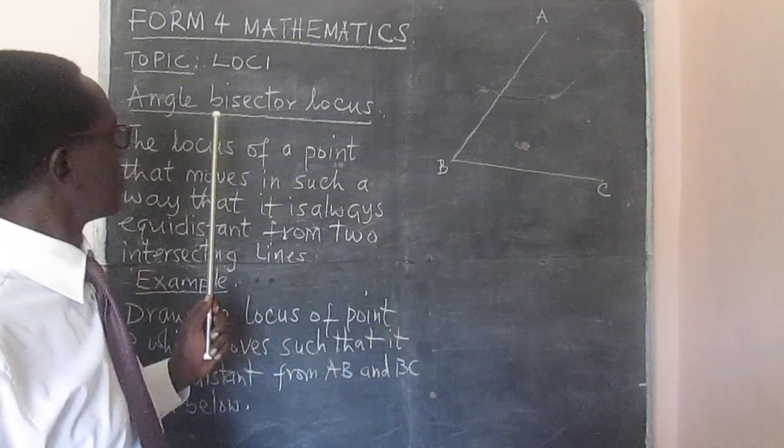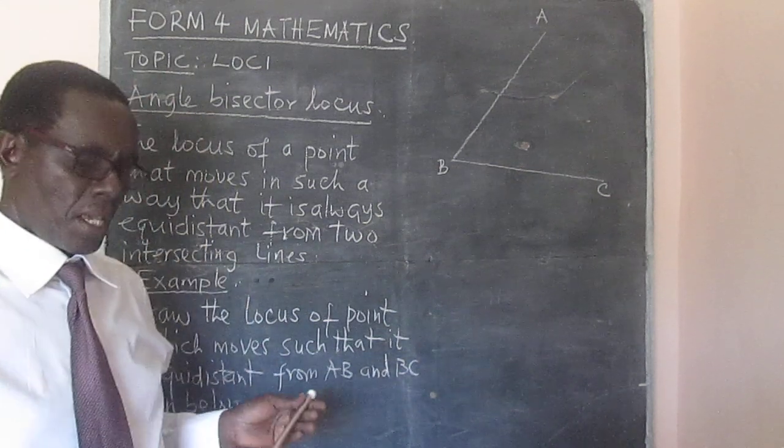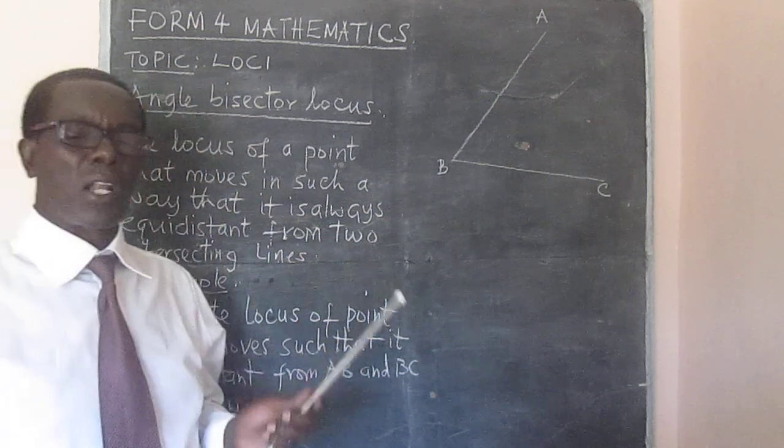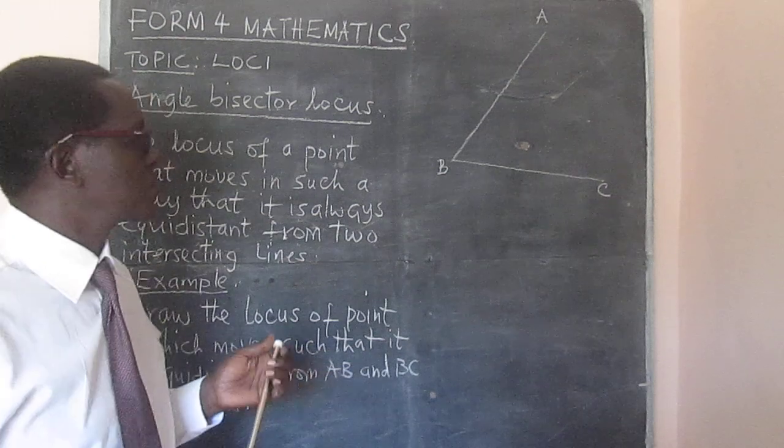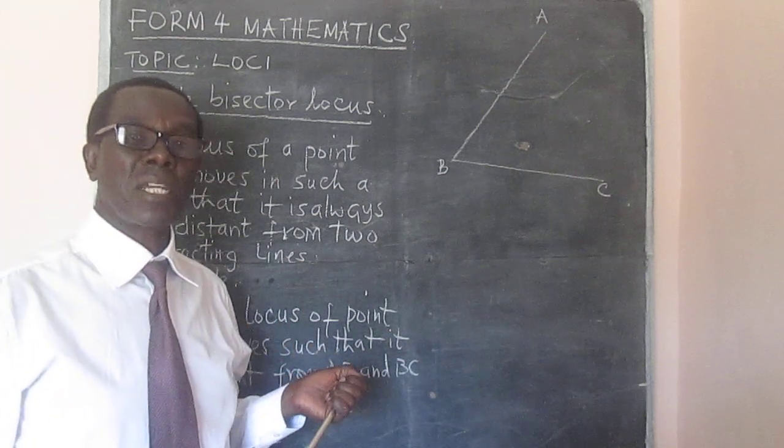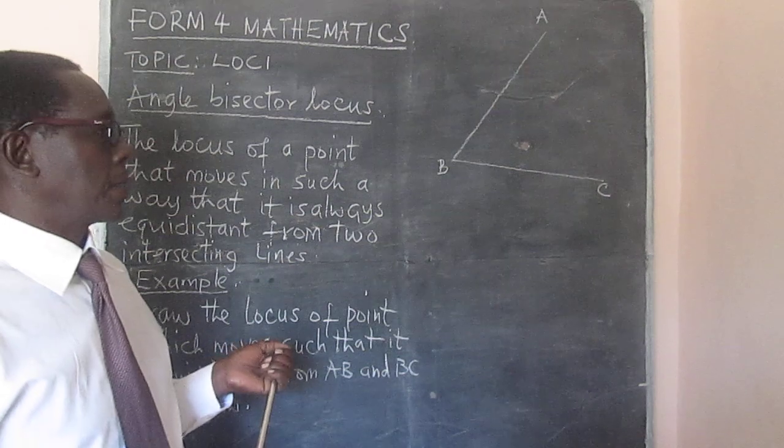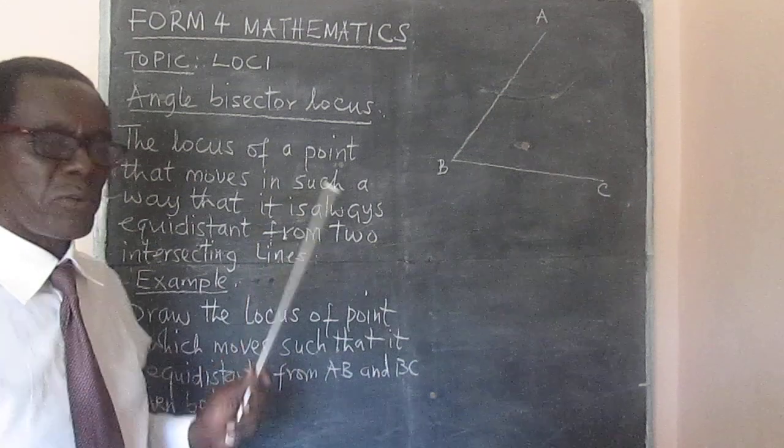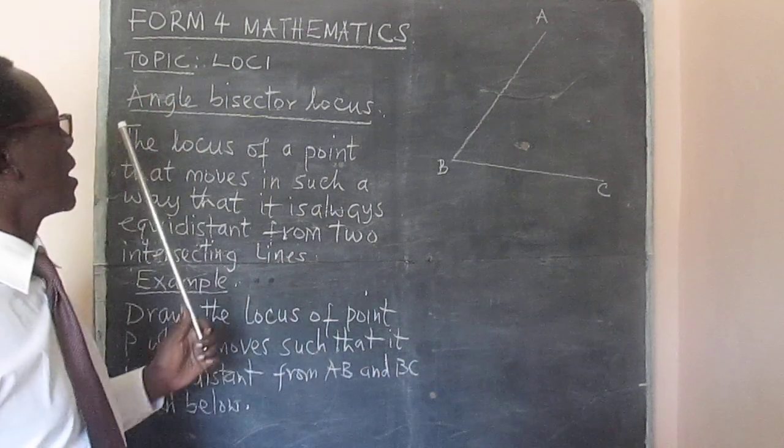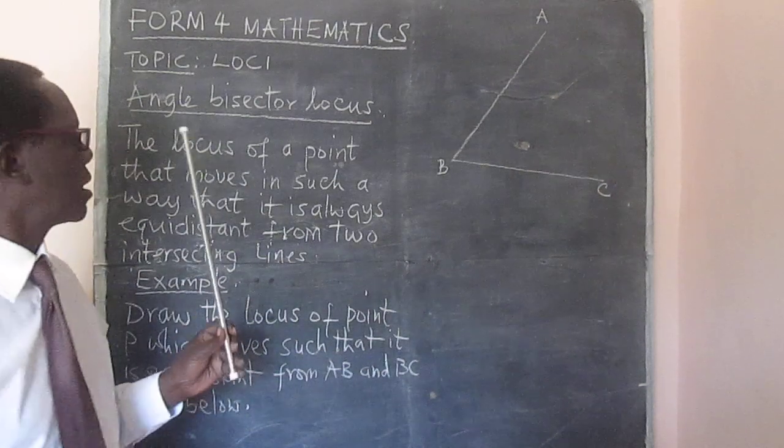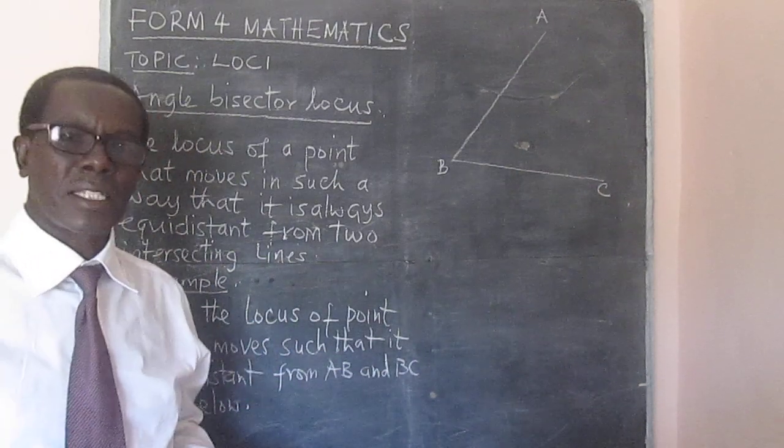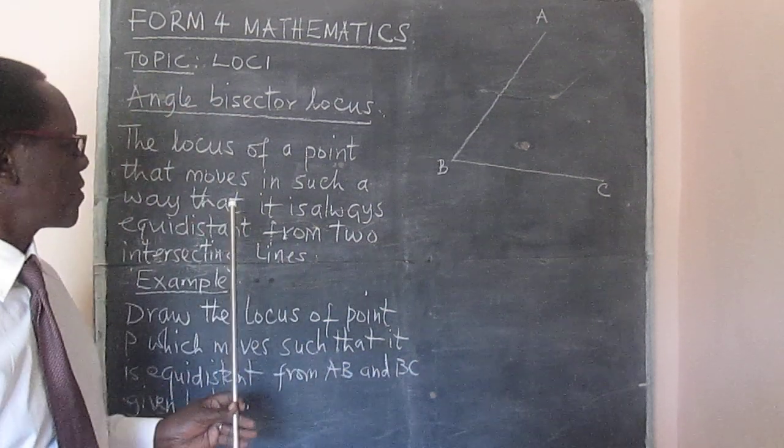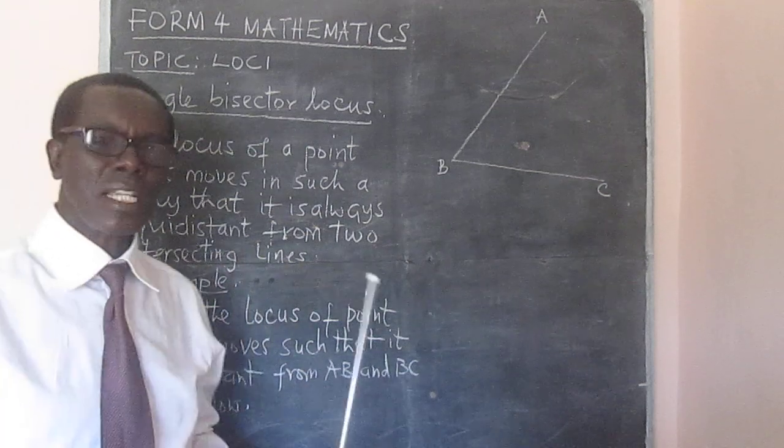This is the angle bisector locus. Like we've seen in the previous cases, the topic of loci is actually an application of very basic geometric techniques, and you're going to see that even in this one we are doing today. The angle bisector locus is the locus of a point that moves in such a way that it is always equidistant from two intersecting lines.